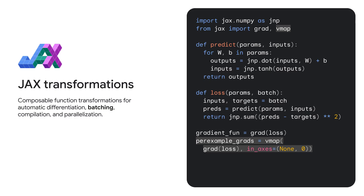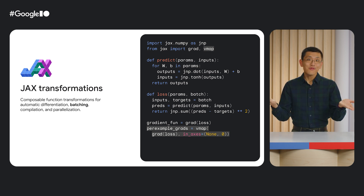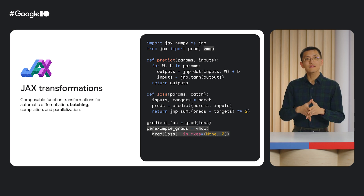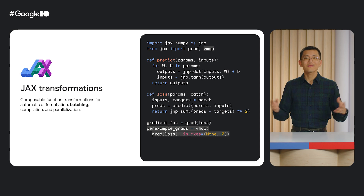Another function transform is vmap. Vmap makes it easy to turn a function that was written for one element into a function that works for many elements, sometimes called vectorization or batching. Vmap does this without using a for loop, but instead transforms the array and matrix dimensions of each calculation to account for batched inputs. In our example, we've vectorized the function that computes the gradients of our loss function using vmap, allowing it to compute the gradients of multiple batches all at once. And this works for any function, not just NumPy functions.